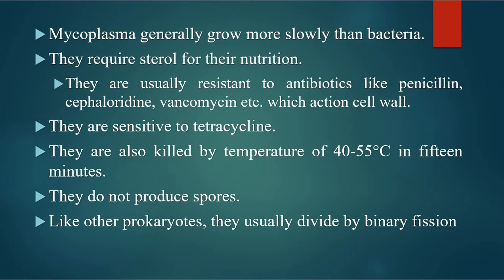Mycoplasma generally grow more slowly than bacteria. They require sterol for their nutrition. They are usually resistant to antibiotics like penicillin, cephaloridin, and vancomycin, which act on the cell wall. They are sensitive to tetracycline. They are also killed by temperatures of 40 to 55 degrees centigrade in 15 minutes. They do not produce spores. Like other prokaryotes, they usually divide by binary fission.